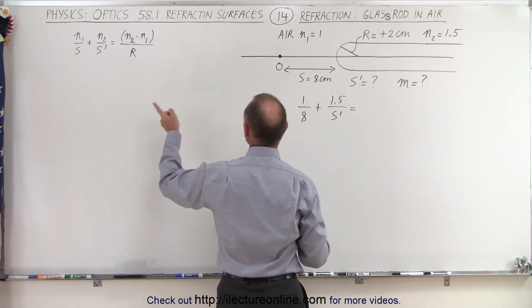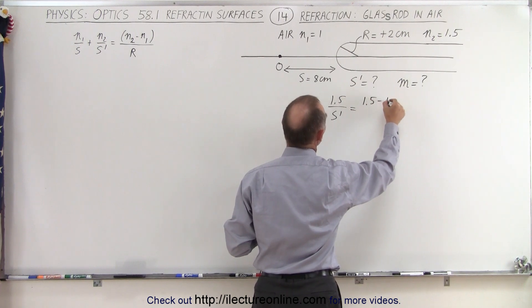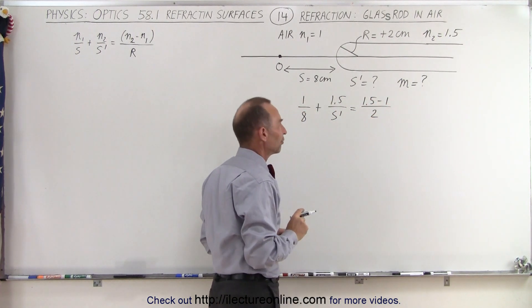and that's going to be equal to n2 minus n1, which is 1.5 minus 1, divided by the radius of curvature, a positive 2.